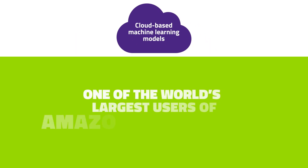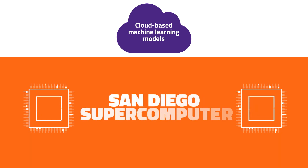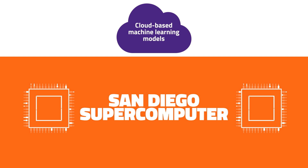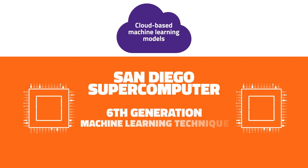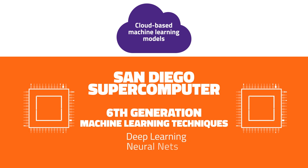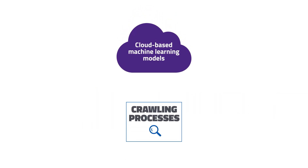While Webroot is one of the world's largest users of Amazon Web Services, we also leverage the San Diego supercomputer to take advantage of massive processors to power our highly advanced machine learning systems, which use sixth-generation techniques like deep learning and neural nets. Those models are fed back into our crawling processes to help analyze millions of new and updated URLs each day.